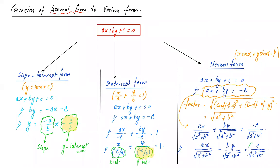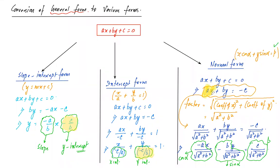So to convert a general equation to normal form: first shift the constant to the right, then divide by √(a² + b²). If the right-hand side is negative, multiply throughout by −1 to keep p positive. The resulting right-hand side is p (perpendicular distance), the coefficient of x is cosα, and the coefficient of y is sinα. This is a very vital topic.